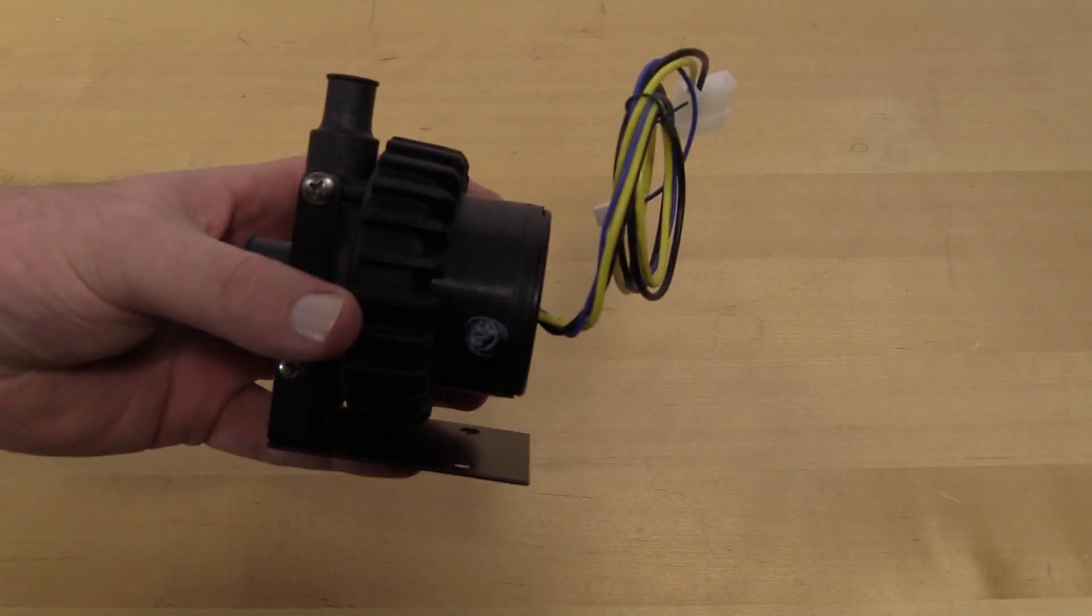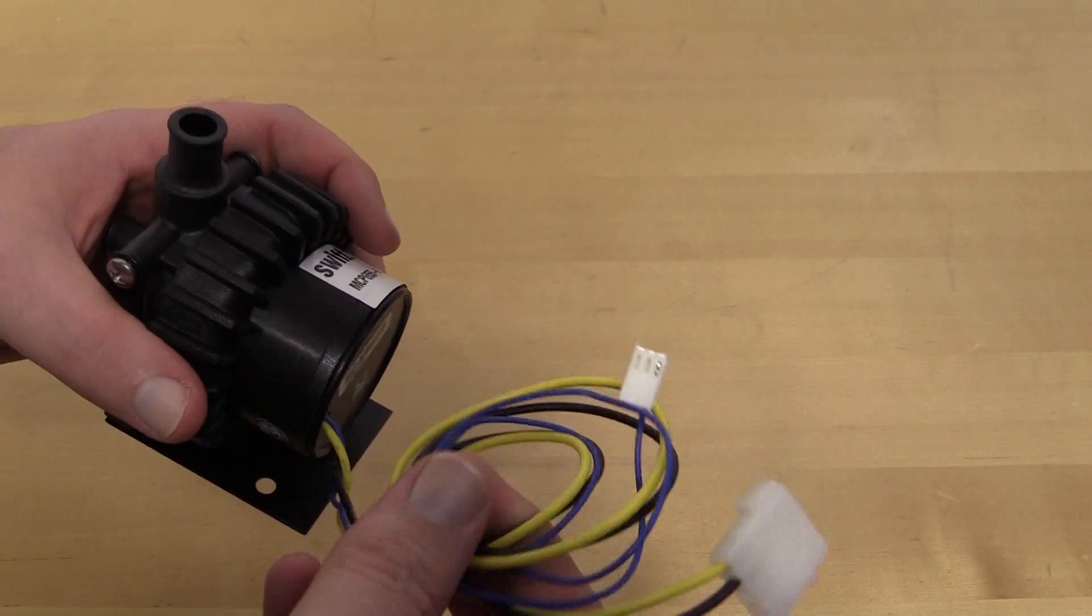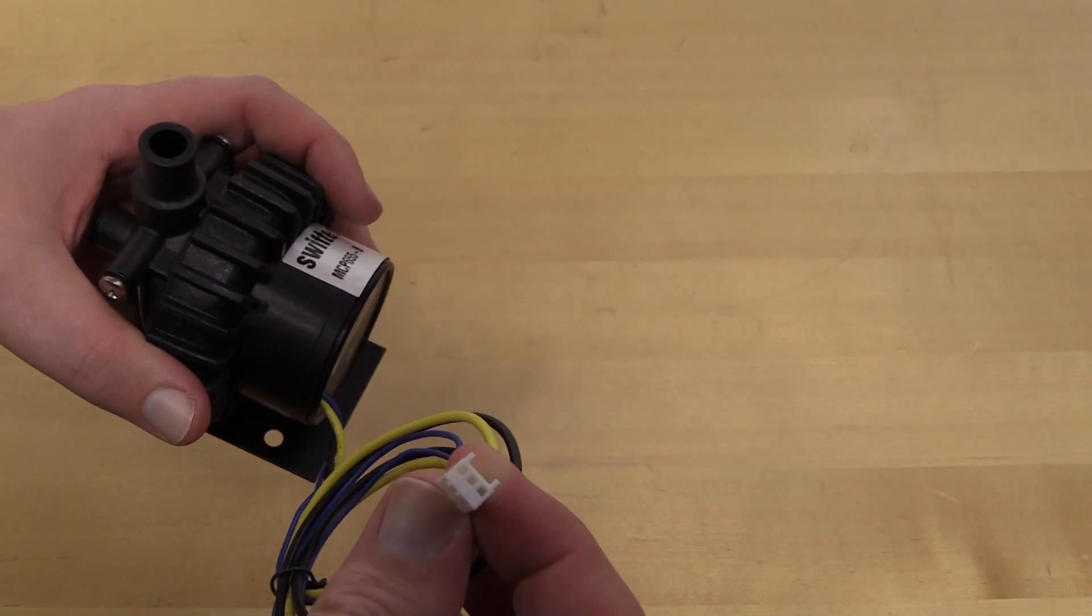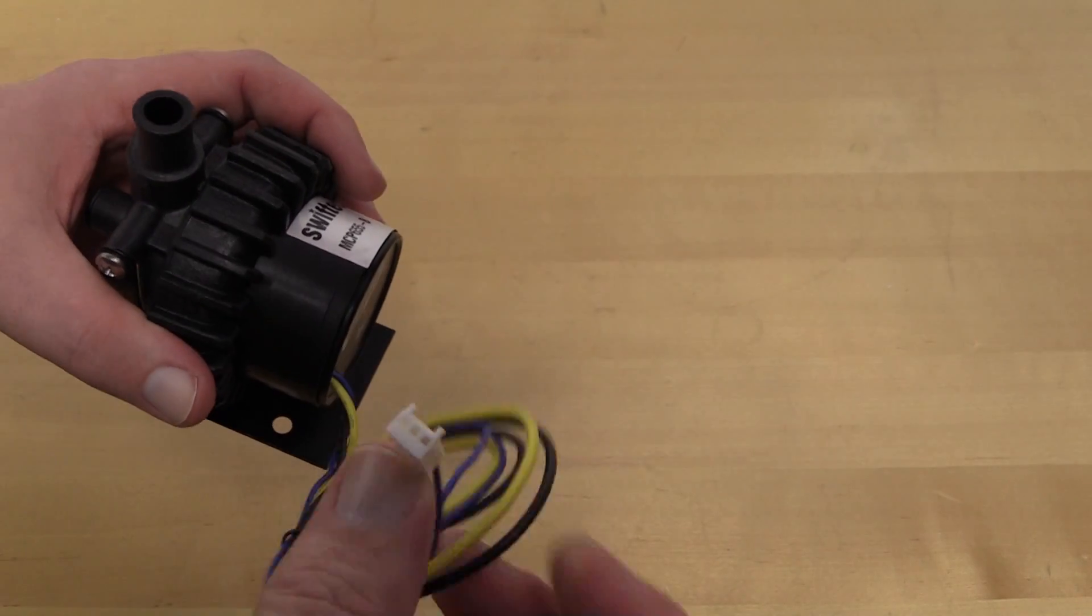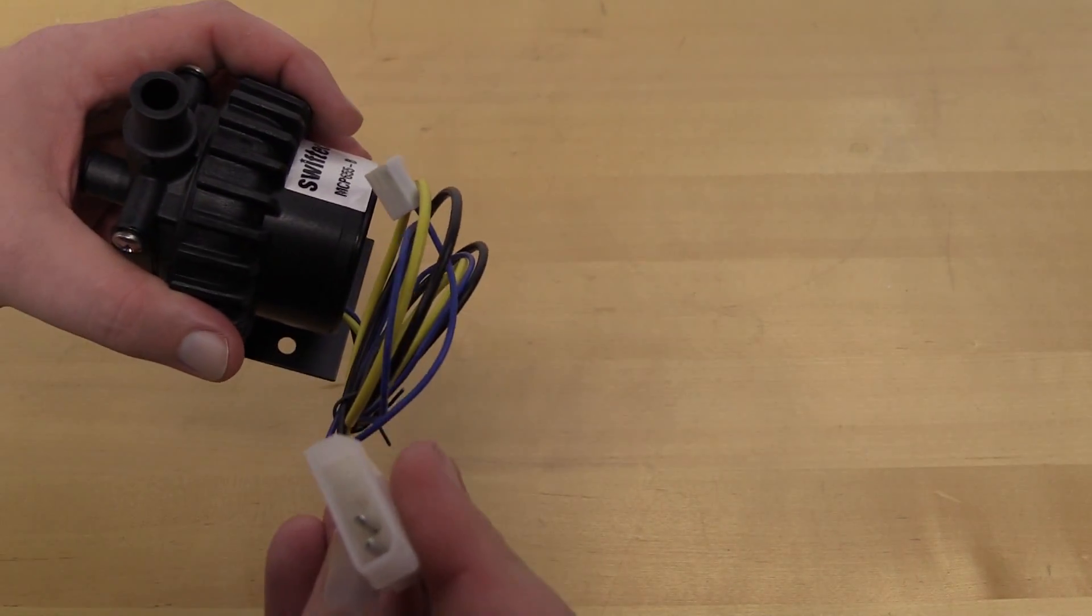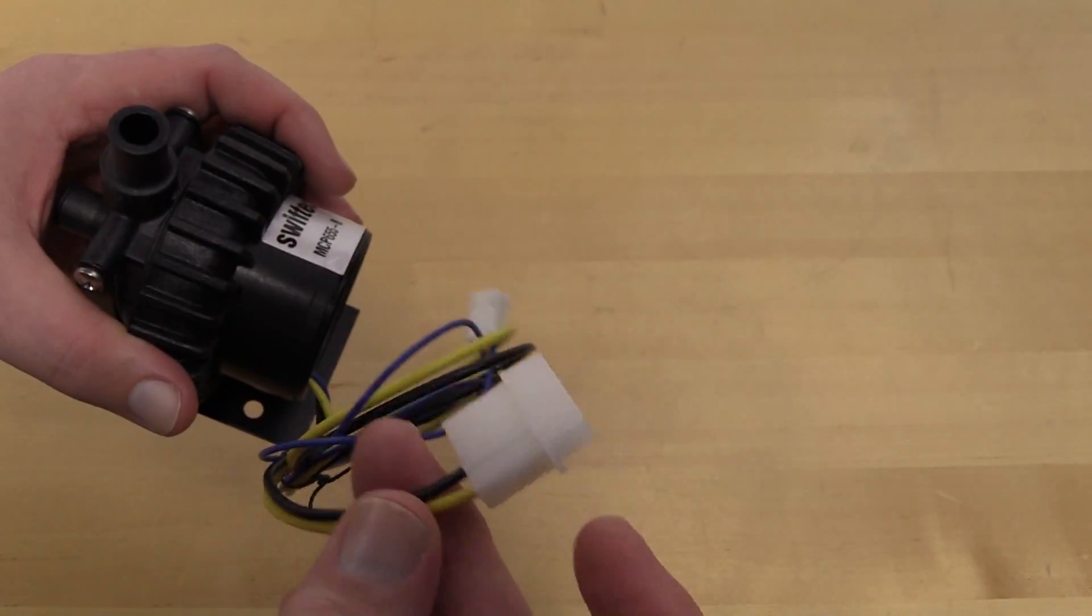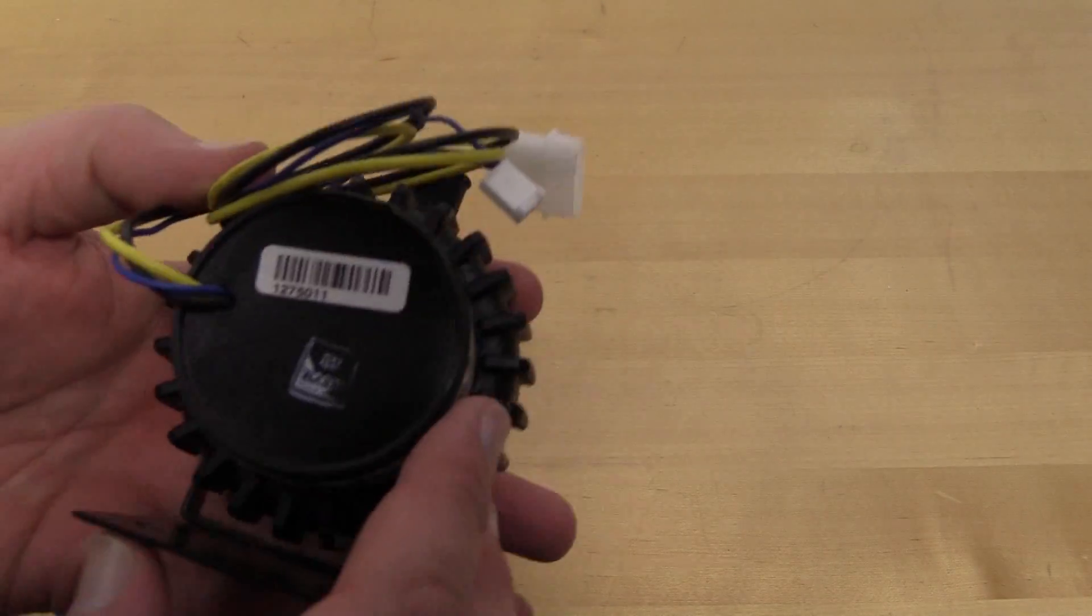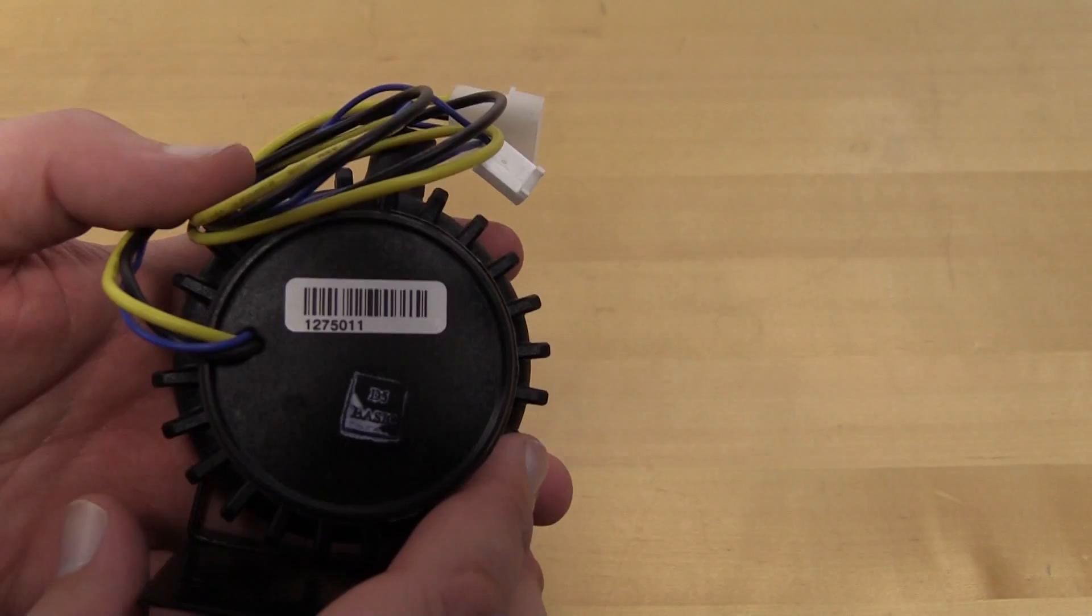And then here's the pump itself. So, you have your speed controller. So basically your three pin, you have your power and this is of course the dash B model. So there's no speed controller on it.